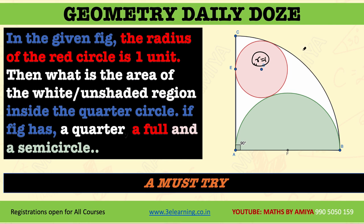So the area of the shaded portion is π r² = π, which is the answer to this question. The area of the white portion equals the area of the red portion. The radius is given as one unit, so π r² gives us π — that is the answer.